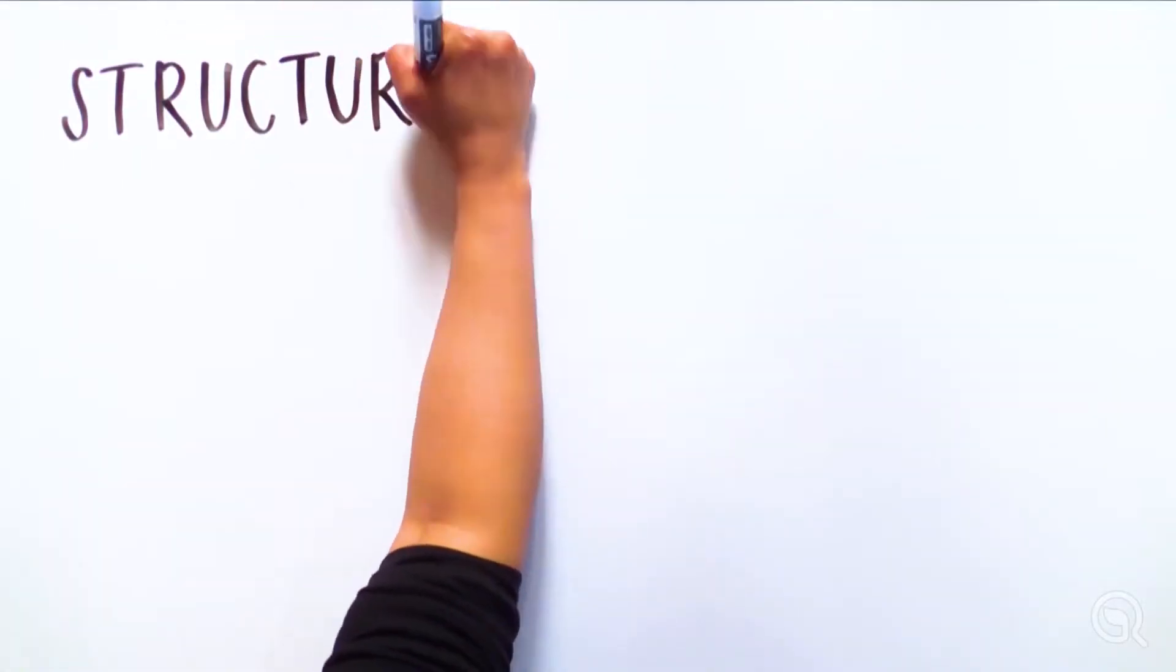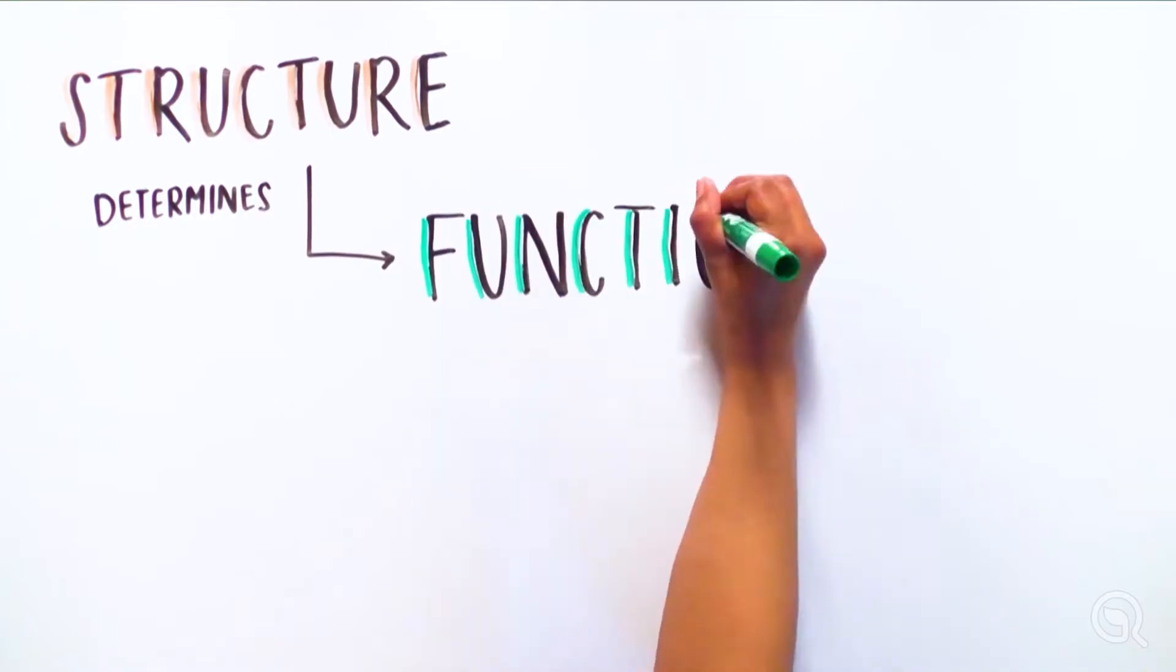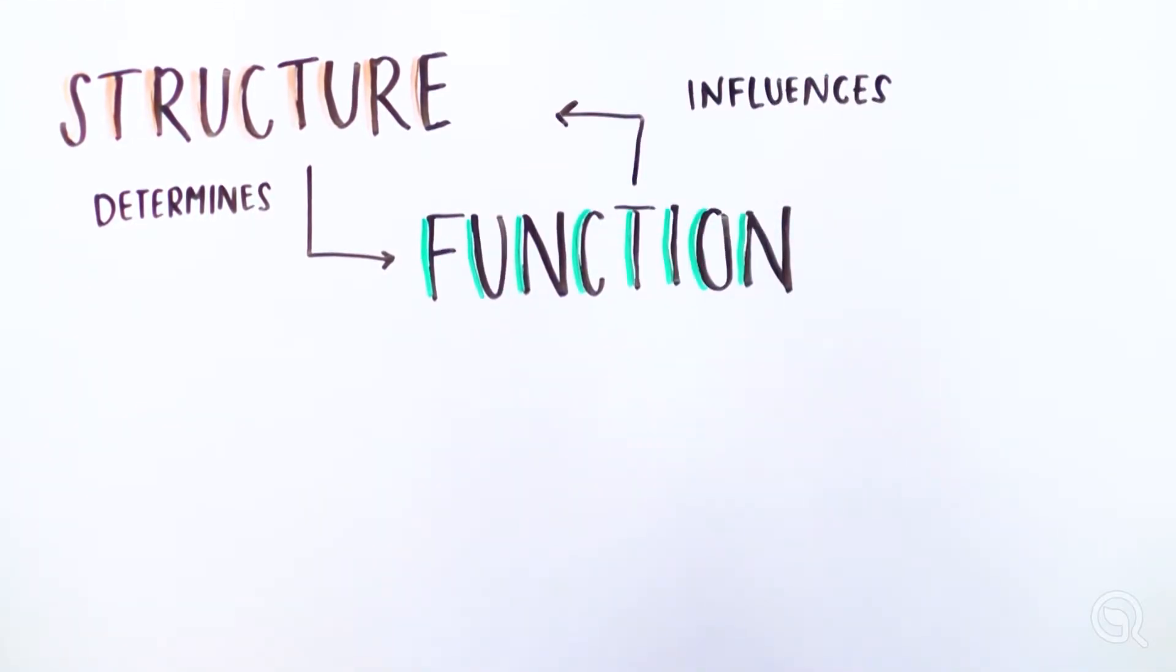A central idea in biology is that structure determines function, and function also influences structure. The shapes and arrangements of a structure determine what it does, and the task affects the structure needed. It is a key idea in engineering.